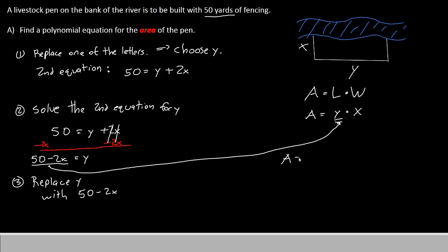We can simplify that a little bit by taking x times both terms of the binomial. We'll have area equals 50 times x, or 50x, minus 2x times x, which is 2x squared. This will be our polynomial that represents the area. That's the end of part A.